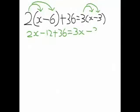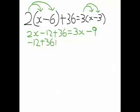Because multiplying a negative with a positive gives you a negative. So now we're going to gather like terms. We're going to put all the constants on one side of the equal sign and all the unknowns, or the x's, on the other side. So that means negative 12 plus 36, and then we're going to add 9 — because when you move something from one side of the equal sign to the other, its sign has to change. So that's 3x minus 2x.